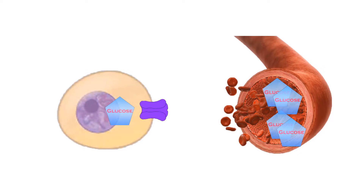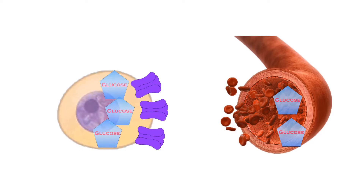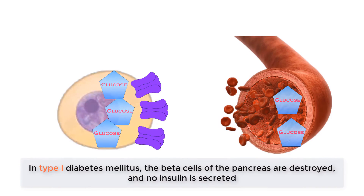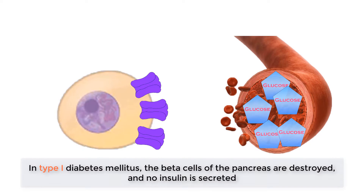To review the role of insulin: insulin causes an increase in the amount of GLUT4 receptors on cell membranes to allow glucose to diffuse out of the blood and into the cells, which lowers blood glucose levels. In type 1 diabetes mellitus, the beta cells of the pancreas are destroyed and no insulin is secreted. Thus, glucose does not diffuse into cells through GLUT4 receptors. The glucose remains in the blood, resulting in severe hyperglycemia, and does not enter the cells, causing cell starvation.